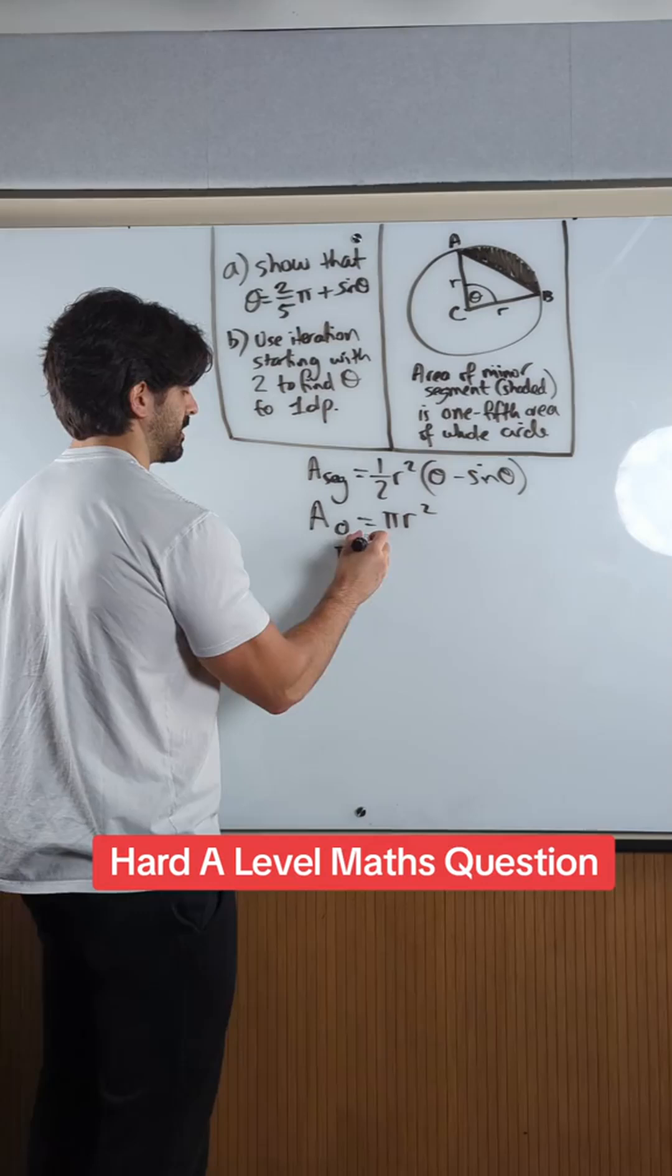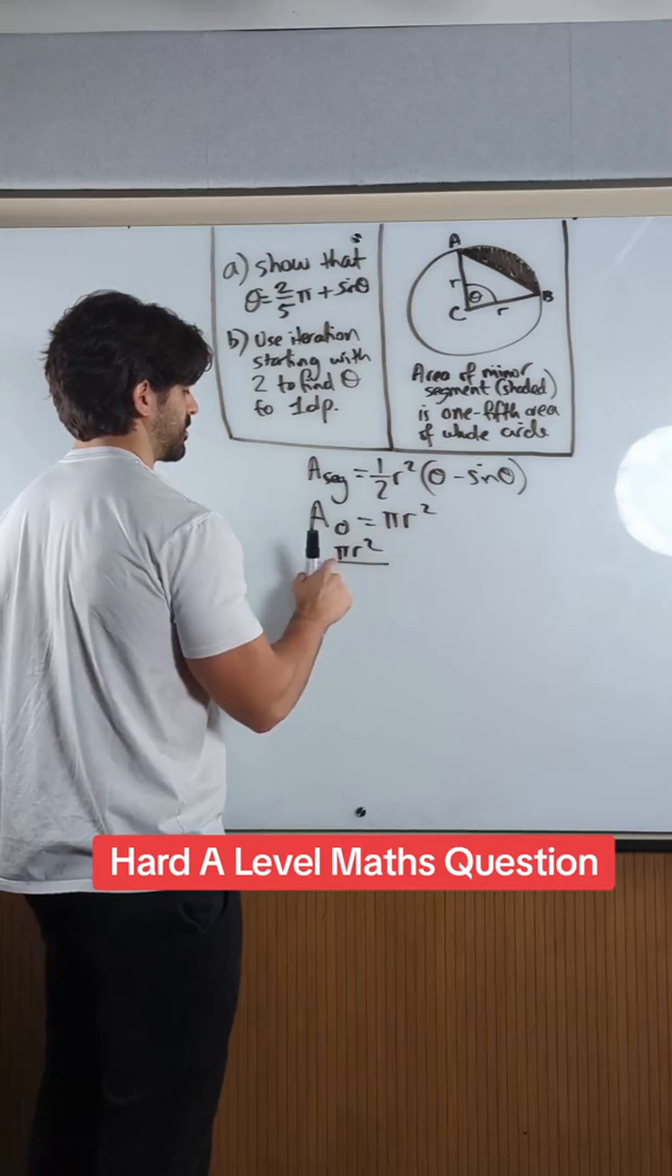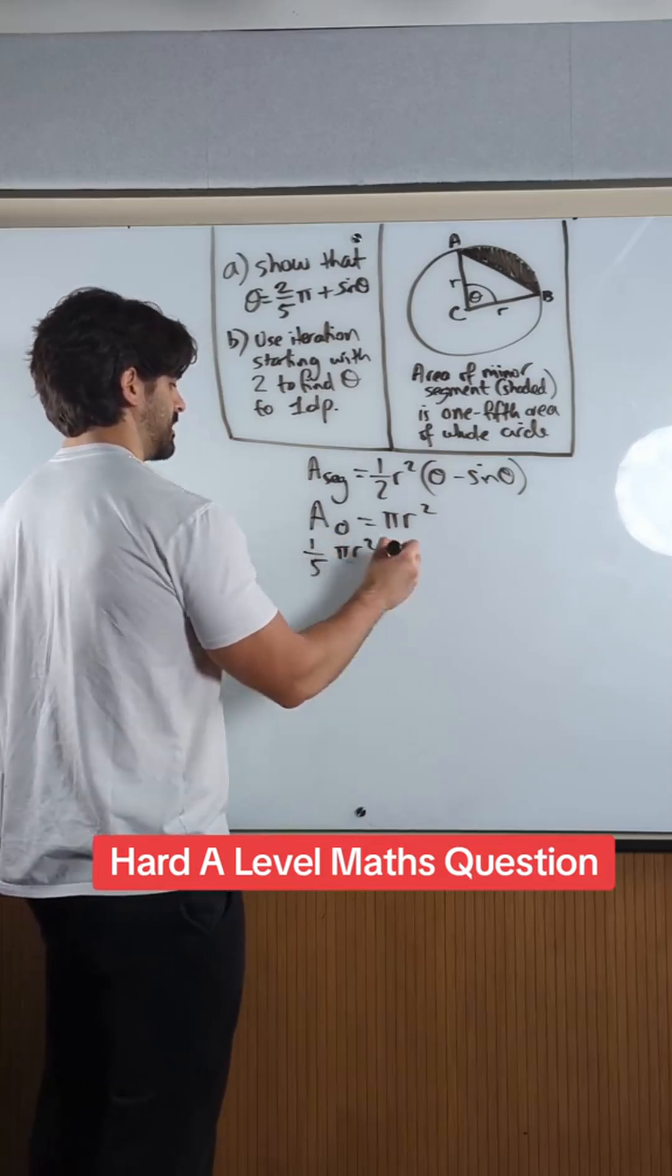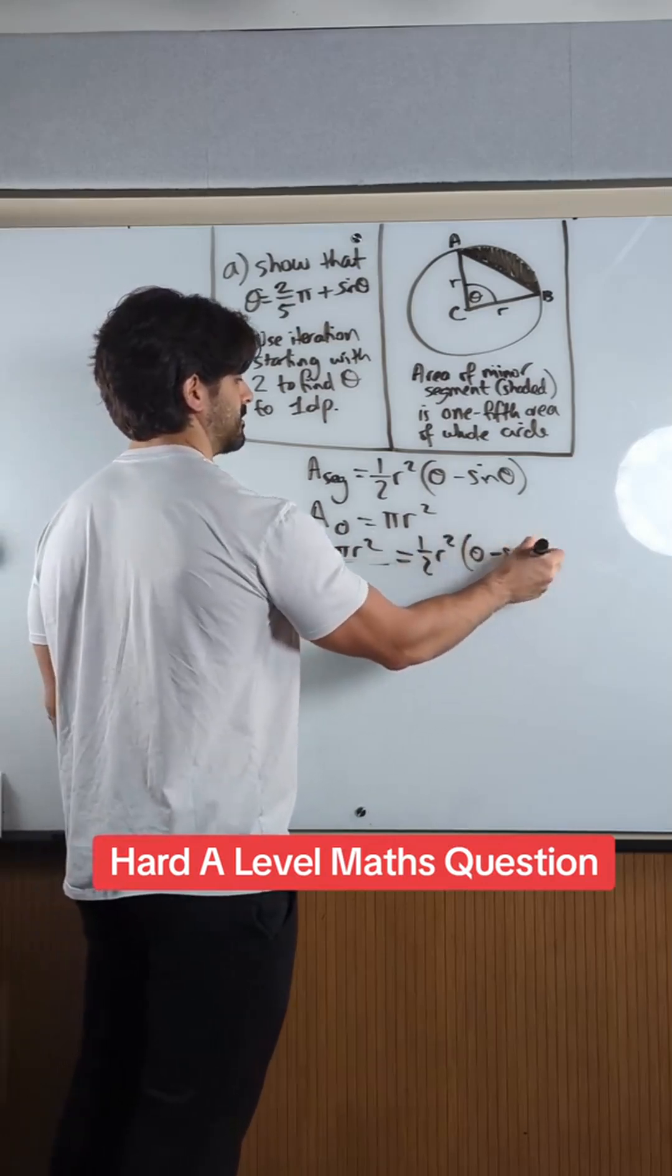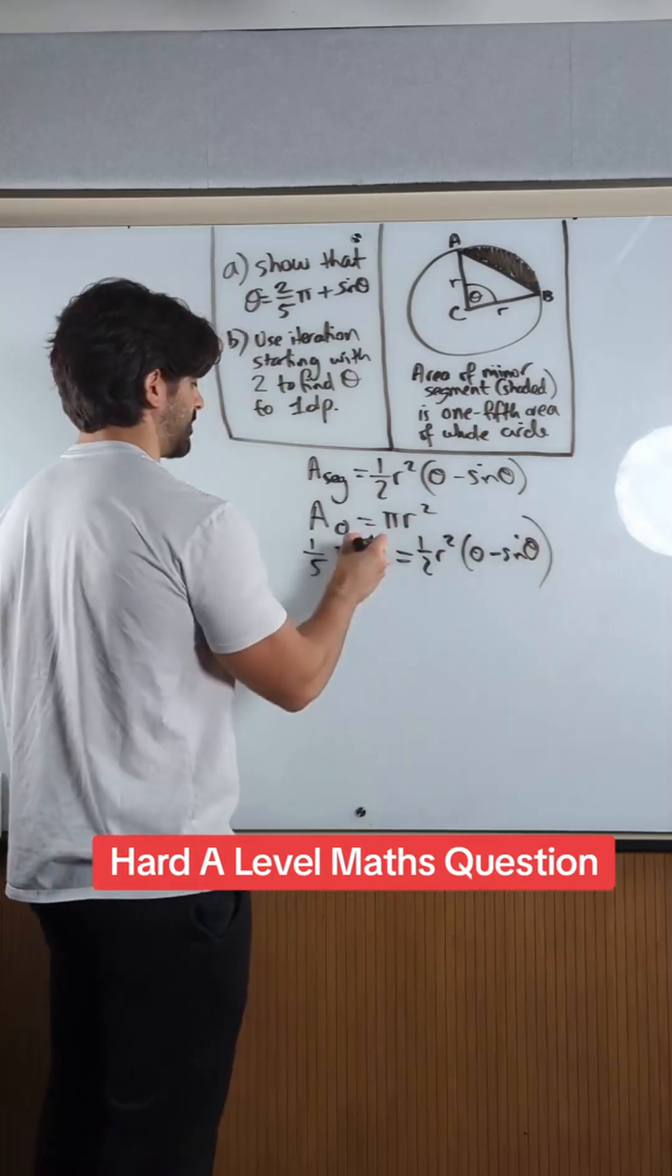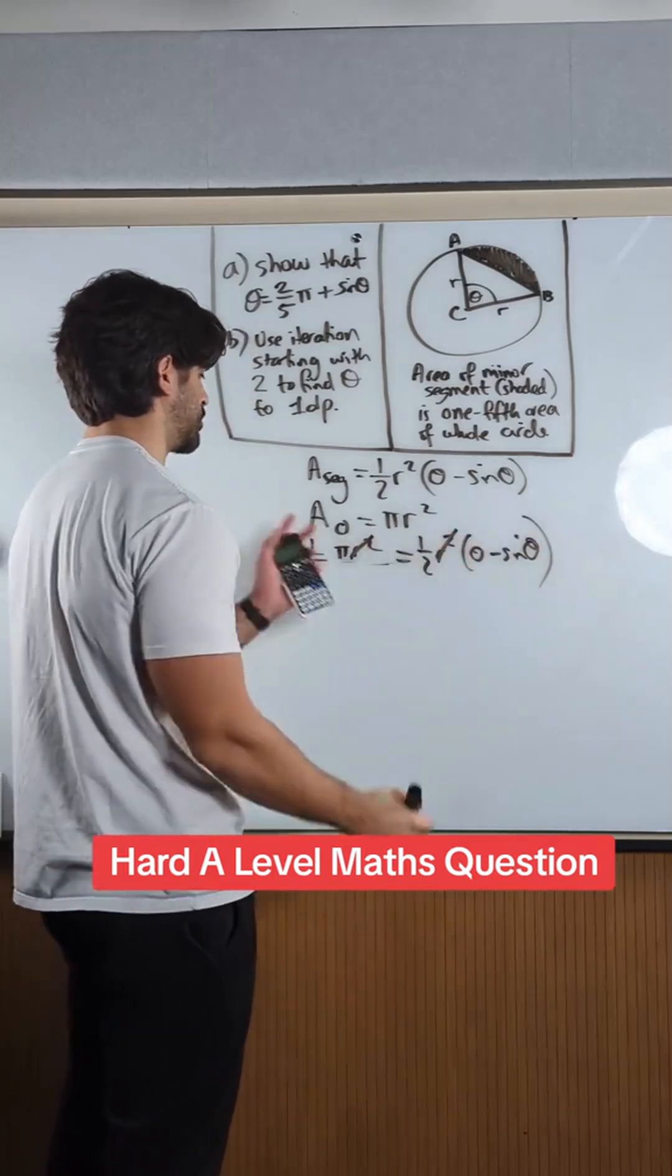So π r squared over 5, or 1/5th, is half r squared theta minus sine theta. Cancel out the r squareds, times 2 by 2.